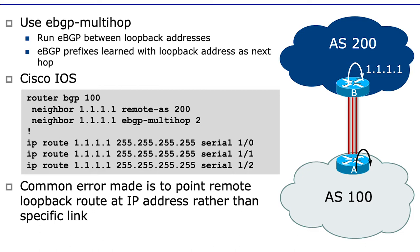So how does router A find how to get to the loopback of router B? What we have to do is put an entry in the global RIB pointing router A at the loopback of router B. In this example, I have set up three serial connections between AS100 and AS200. So I put a simple static route for router B's loopback into the configuration on router A, pointing to the three serial interfaces going to AS200.